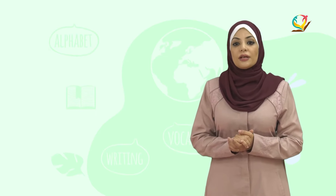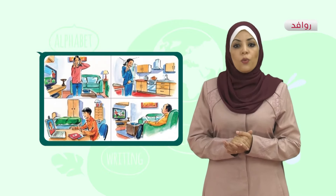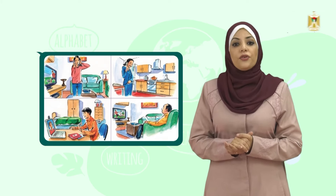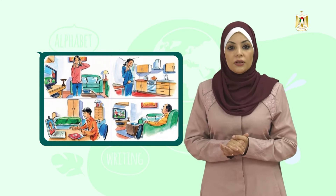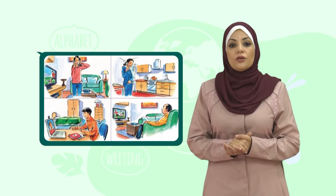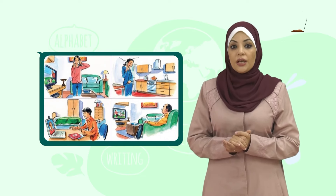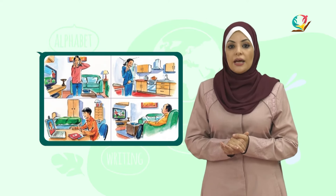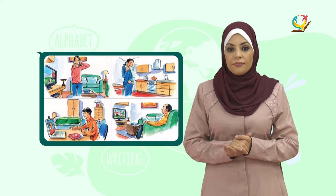Now let's see our lesson today. We have a conversation between Nadia and her friend Tina — these are our new characters in eighth grade. First, look at this picture. What can you see? The first girl is on the mobile phone; the second girl is talking on the landline phone; the boy is on the computer; and the man is watching TV.